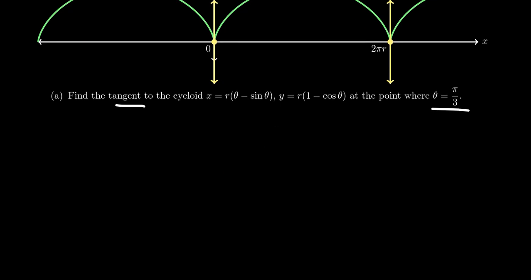We first begin by computing the derivative. Remember y prime, which is shorthand for dy over dx, is equal to dy over d theta divided by dx over d theta. Taking the derivatives here, the derivative of y with respect to theta—we're going to treat r as a constant, the radius doesn't change—we get r times the derivative of 1 is 0, and the derivative of negative cosine will be positive sine. So you get r sine theta on top.